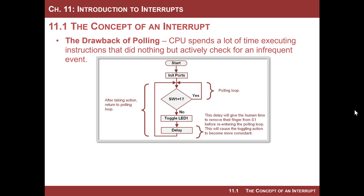Let's look back at polling as a way to motivate why we need this new type of operation in a computer. Polling was where in your main program loop you were waiting for some event to occur. We looked at pressing a button — you never knew when the button was going to get pressed, but the button came in on a port, so we just sat there and read the port over and over, testing the bit the button was connected to, and just waited.